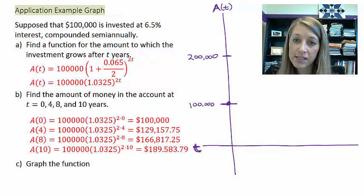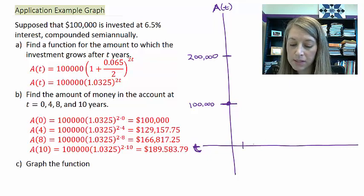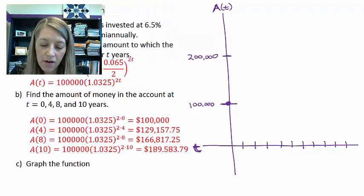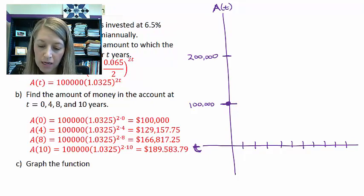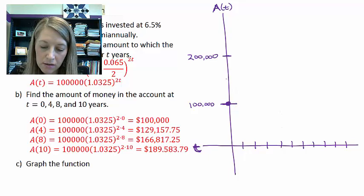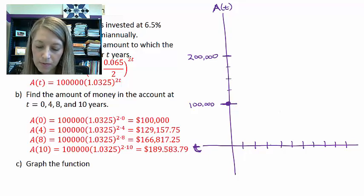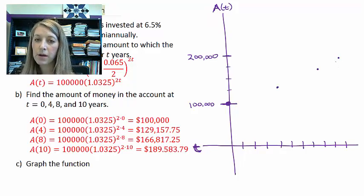So let me define a scale for my t-axis, keeping my tick marks consistent. One, two, three, four, five, six, seven, eight, nine, ten. At zero, I have $100,000. At four, I have $129,000. So that would be here. At eight, I have $166,000. And at 10, I have $189,000. So this is my graph here.